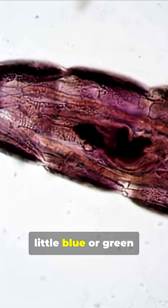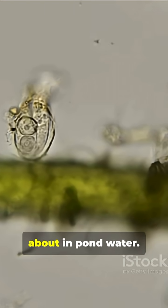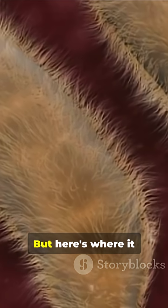Under a microscope, they look like little blue or green trumpets waving about in pond water. But here's where it gets wild.